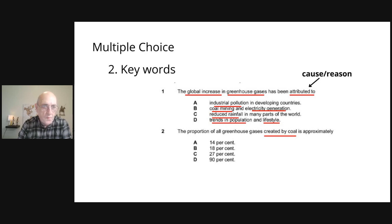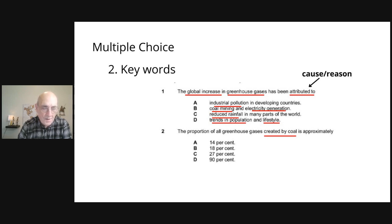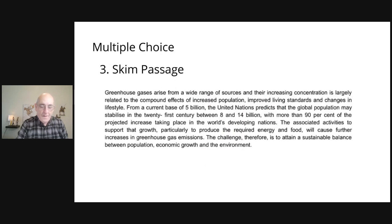Moving to question two: it also asks about greenhouse gases, but a certain type of greenhouse gases. We're always looking for clues and keywords that make it more specific and narrow down our options so that when we look for the answer it's easier to locate and confirm we have the correct one. The answer options include different percentages, and numbers are always important keywords when identifying information.